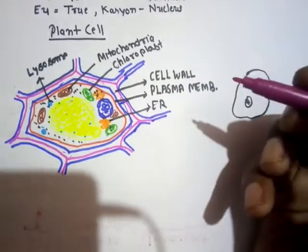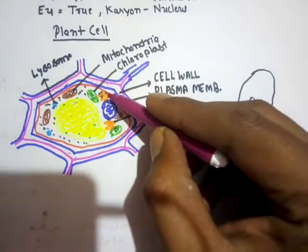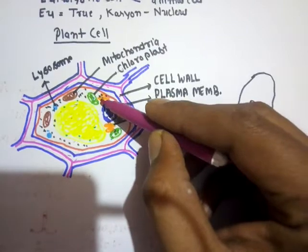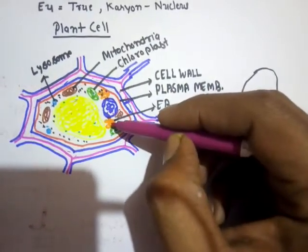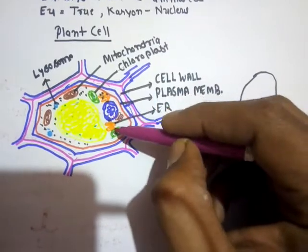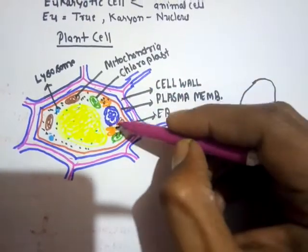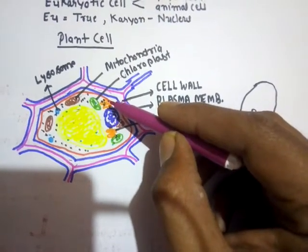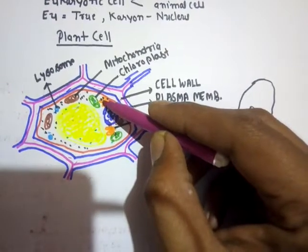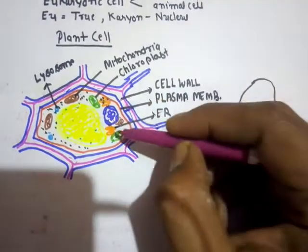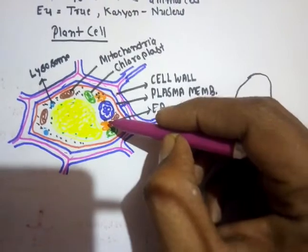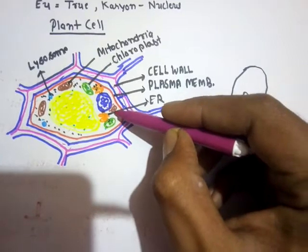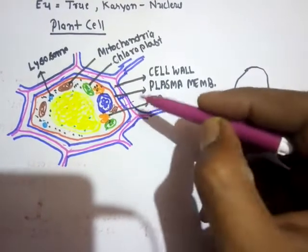Other membrane-bound organelles are the endoplasmic reticulum, found associated with the nucleus. Endoplasmic reticulum with attached ribosomes is rough in appearance and is called rough endoplasmic reticulum. Endoplasmic reticulum without attached ribosomes is smooth in appearance, called smooth endoplasmic reticulum. The rough ER performs protein synthesis because it has ribosomes, which are the site of protein synthesis. The smooth ER participates in lipid formation and detoxification.